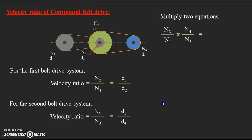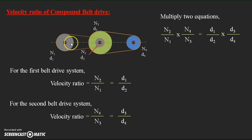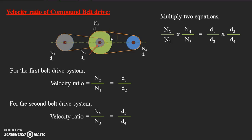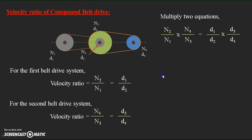Observing that the follower of the first belt drive and the driver of the second belt drive are connected on the same shaft, their speed is the same — meaning N3 equals N2. Therefore N2 and N3 cancel each other out in the equation.